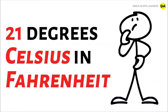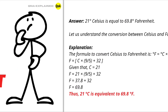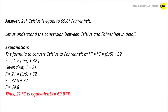21 degrees Celsius in Fahrenheit. The answer is 21 degrees Celsius is equal to 69.8 degrees Fahrenheit. Let us understand the conversion between Celsius and Fahrenheit in detail.